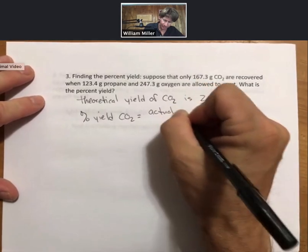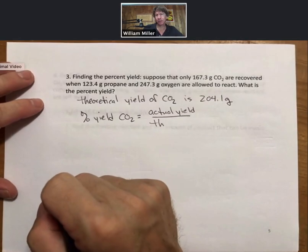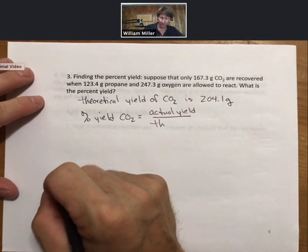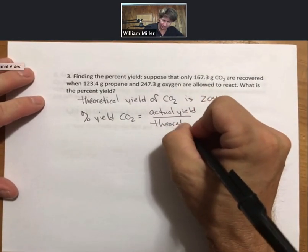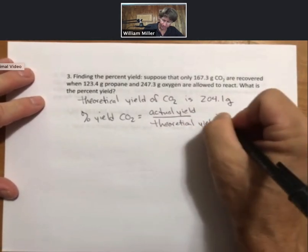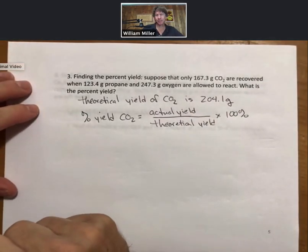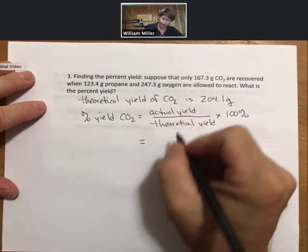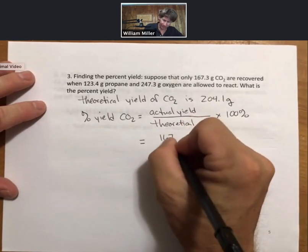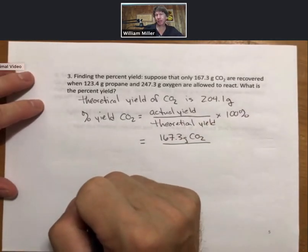Divided by the theoretical, also called the calculated yield since it's calculated, times 100%. We know that it is 167.3 grams of carbon dioxide that are recovered.